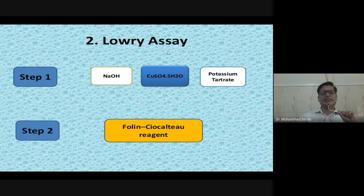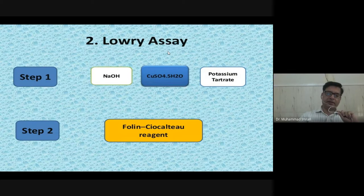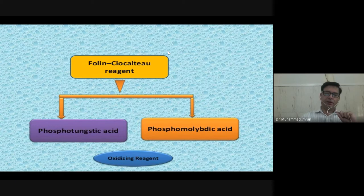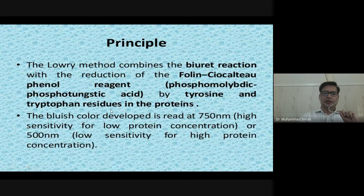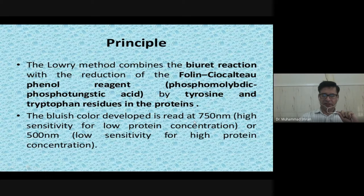The procedure of all protein assays is almost similar, but the principle is different. They show different maximum absorption (lambda max) with protein at a certain wavelength — wavelength is changed for each method. In the Folin-Ciocalteu reagent, you use phosphotungstic acid and phosphomolybdic acid, which are oxidizing reagents. The Lowry method combines the Biuret reaction with the reduction of Folin-Ciocalteu reagent by tyrosine and tryptophan residues in the protein. The bluish color is read at 750 nanometers, giving high sensitivity for low protein concentrations.